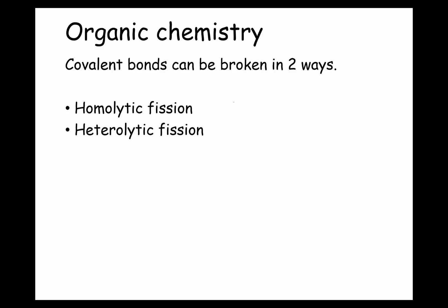By the end of this clip you're going to be able to describe the two ways a covalent bond can be broken, and you're going to learn a whole bunch of new terms. So let's talk about the two ways that covalent bonds can be broken. It's known as fission — homolytic fission and heterolytic fission.